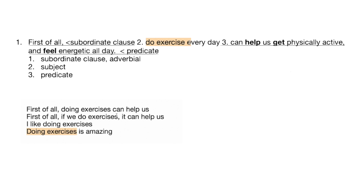In this sentence, this is the adverbial subordinate clause. The subject is the thing the sentence is about, and the predicate is where the verb is — the verb and everything connected to it. The predicate is the part of the sentence that contains the verb and provides information about the subject. We have either independent clauses and dependent clauses, or independent clauses and subordinate clauses.